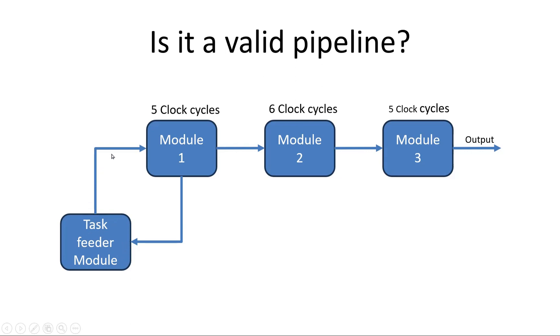The task feeder module feeds tasks to module 1, and module 2 is dependent on module 1's output. Similarly, module 3 is dependent on module 2 output, and module 3 gives final output.